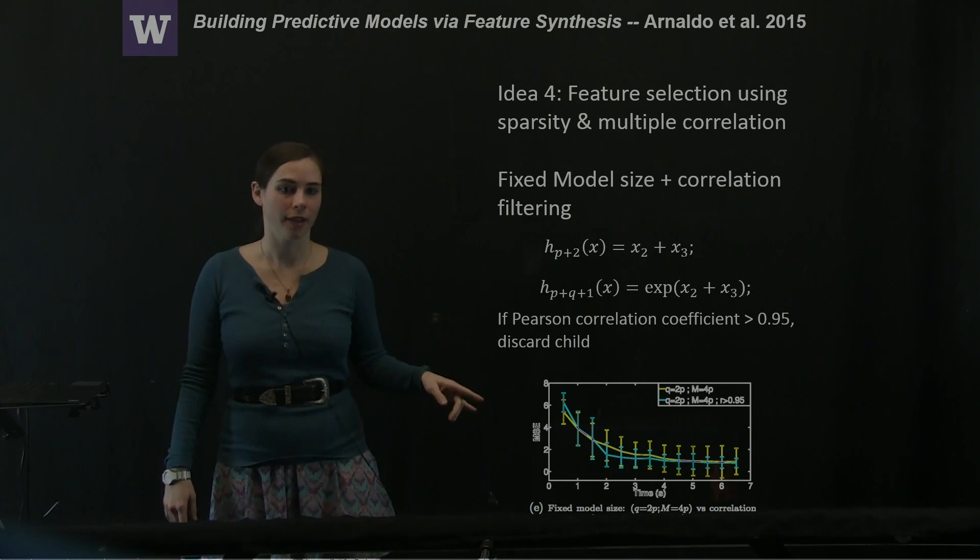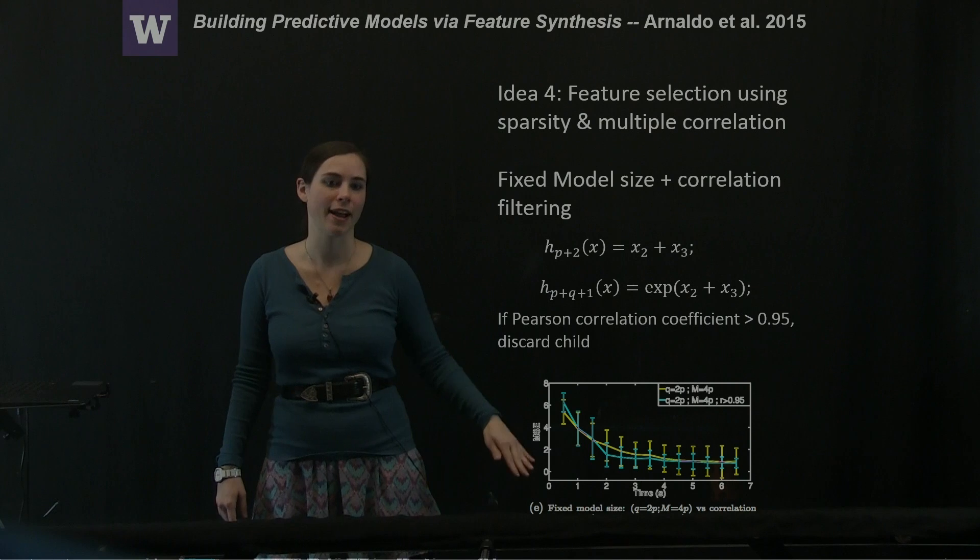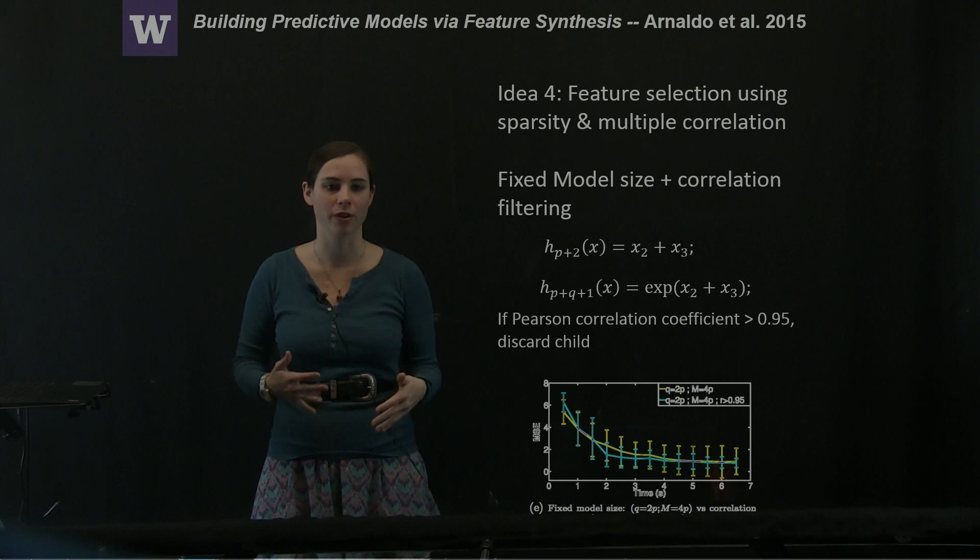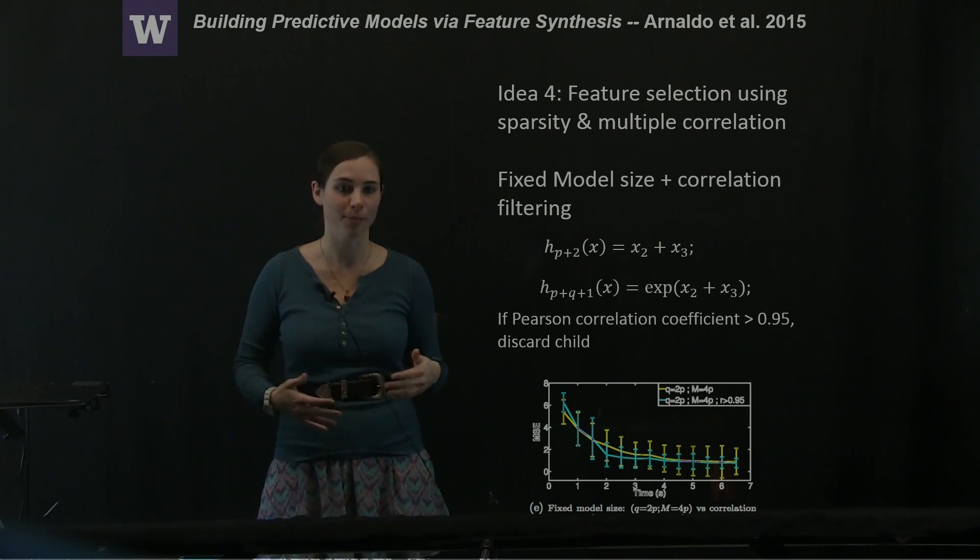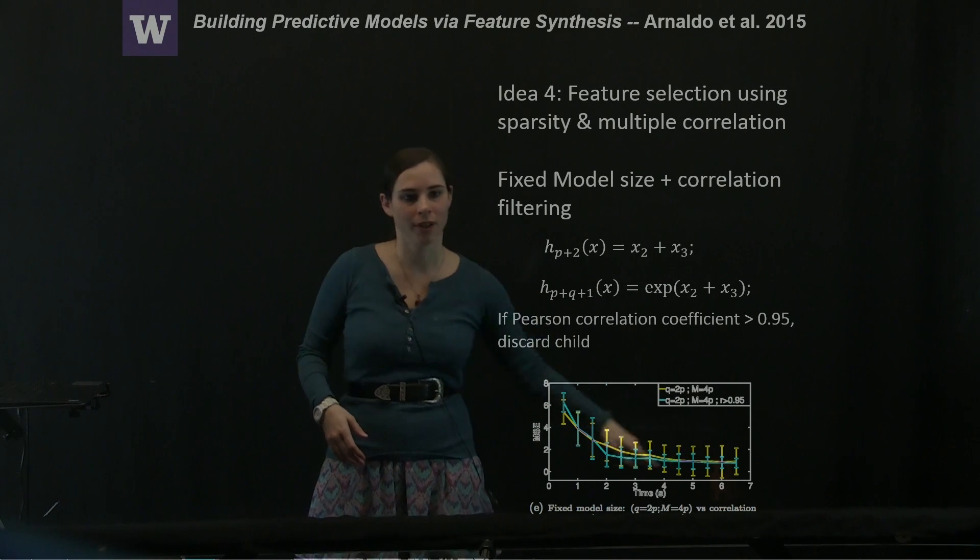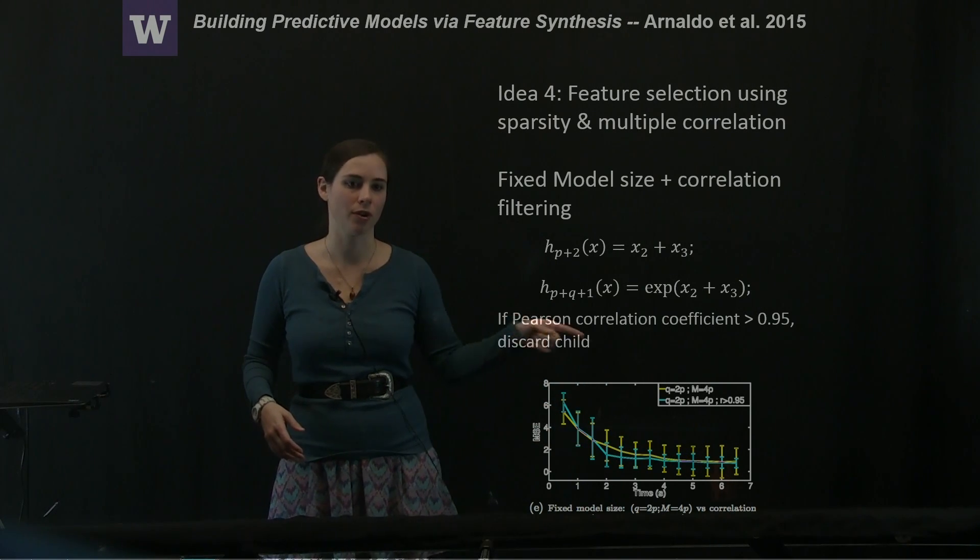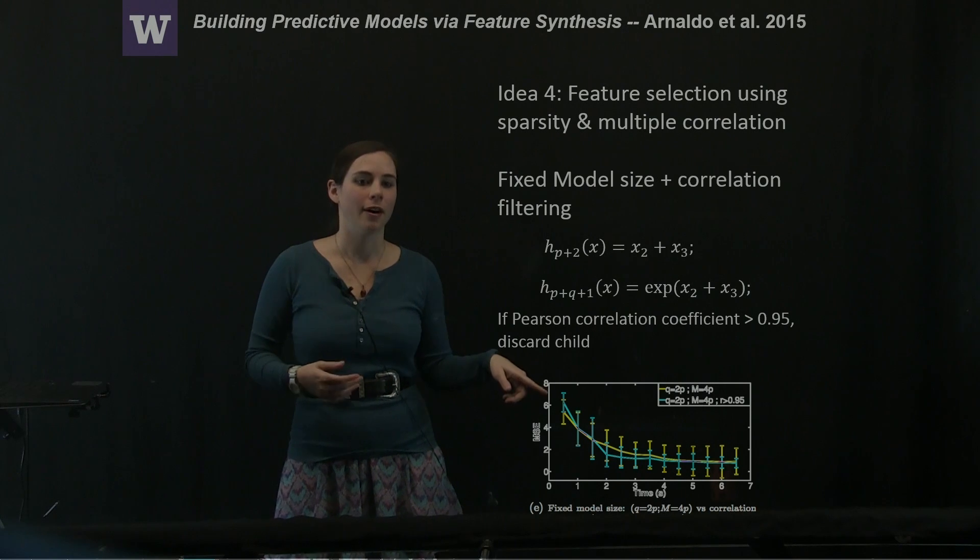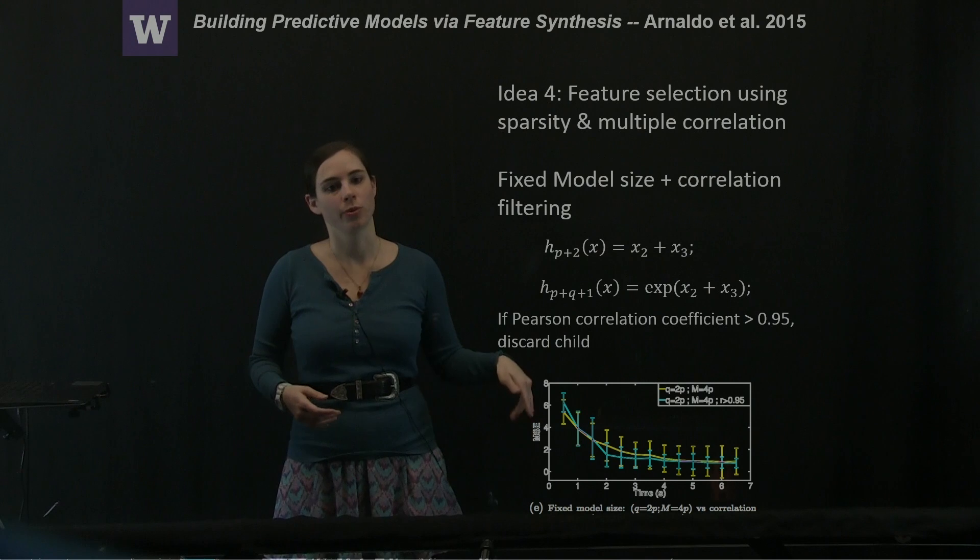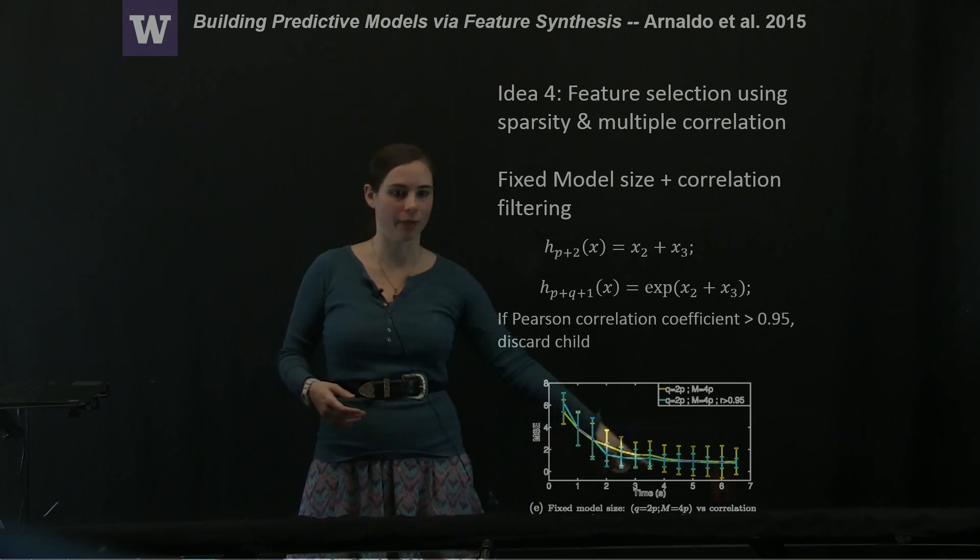So this is really quick. The mean squared error, as they do iterations of producing new generations of features and testing and fitting the model, basically they find that this yellow line, which is without imposing the correlation coefficient threshold, does not converge as fast or reduce the mean squared error as fast as the blue line when they do.